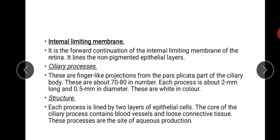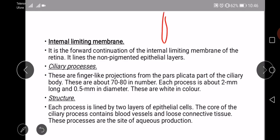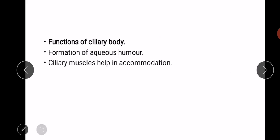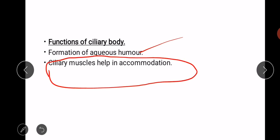The ciliary processes are the site of aqueous humor production. They are lined by two layers of epithelial cells, with blood vessels and loose connective tissue in the core. The functions of the ciliary body are: first, formation of aqueous humor; and second, the ciliary muscles help in accommodation.